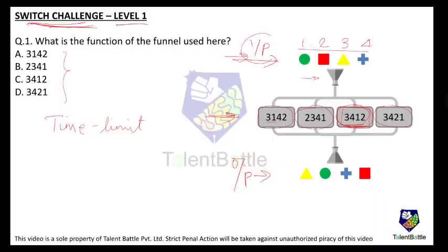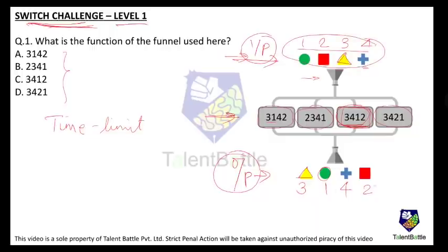We want to make the input the same as the output. In the output, the first diagram is a yellow triangle — its number is 3. The next is a green circle — number 1. Then blue plus sign — number 4. And red square — number 2. So when the input is subjected to function 3 1 4 2, you get the desired output. The answer is 3 1 4 2, which is option A.